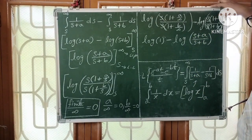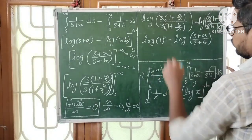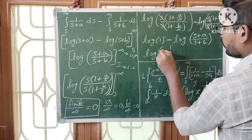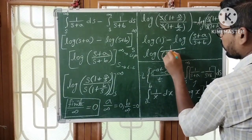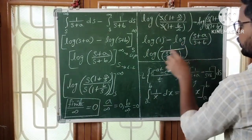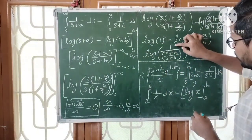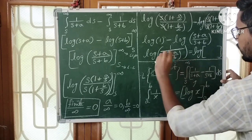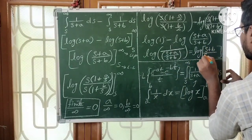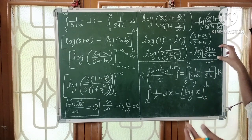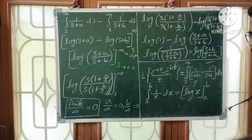Using log a - log b = log(a/b): log 1 - log[(s+a)/(s+b)] = log[1 / ((s+a)/(s+b))] = log[(s+b)/(s+a)]. Therefore, the Laplace transform of (e^(-at) - e^(-bt))/t equals log[(s+b)/(s+a)]. This is the final answer.